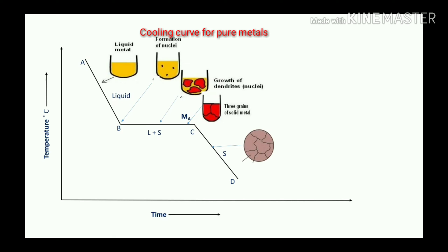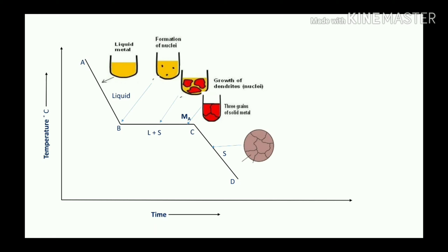The nuclei transform into different grains and grain boundaries. One grain differs from another grain with respect to the number of atoms, orientation, and characteristics, and they are separated by grain boundaries. The total characteristics of the material depend upon the grains and grain boundaries.